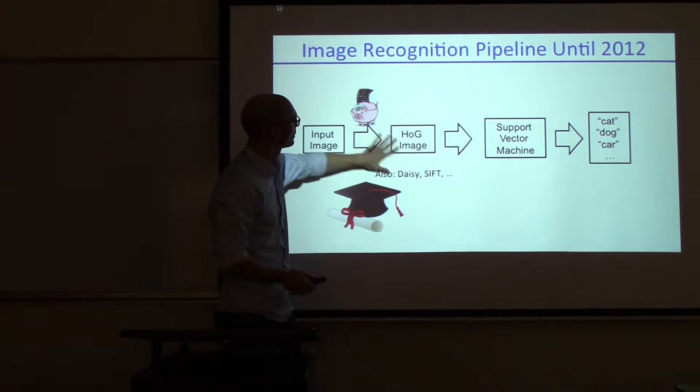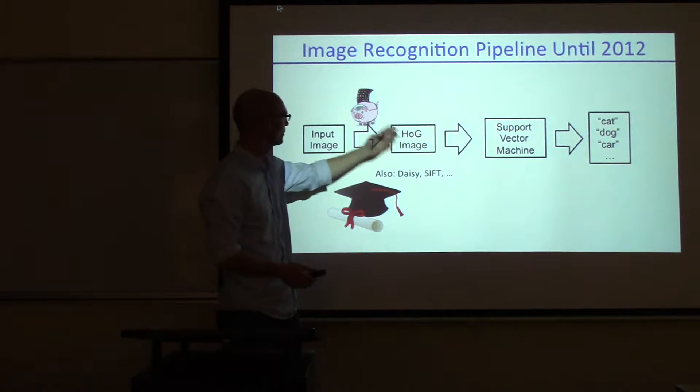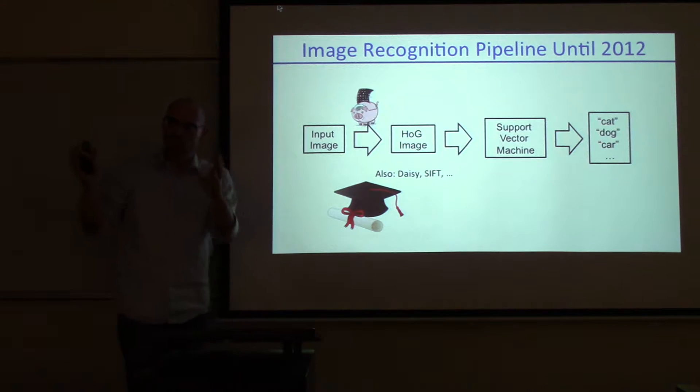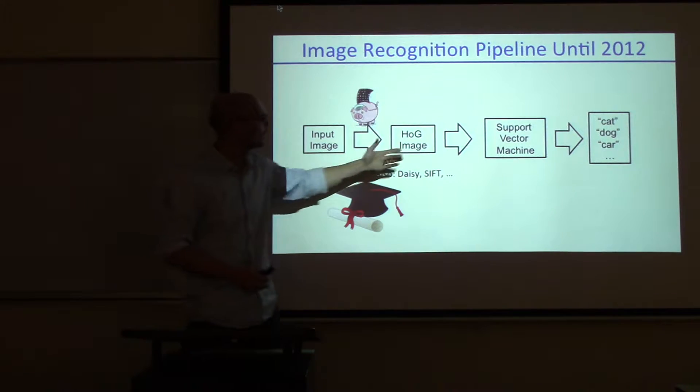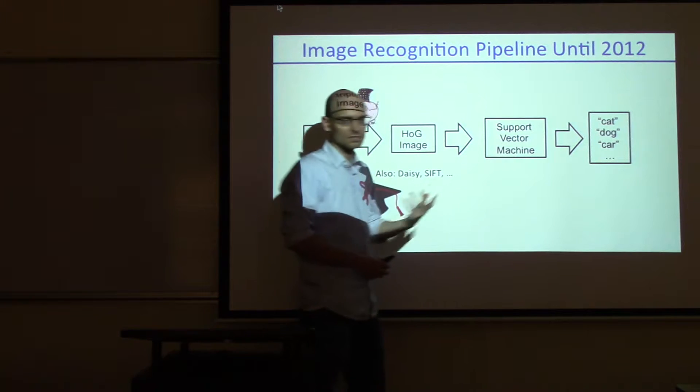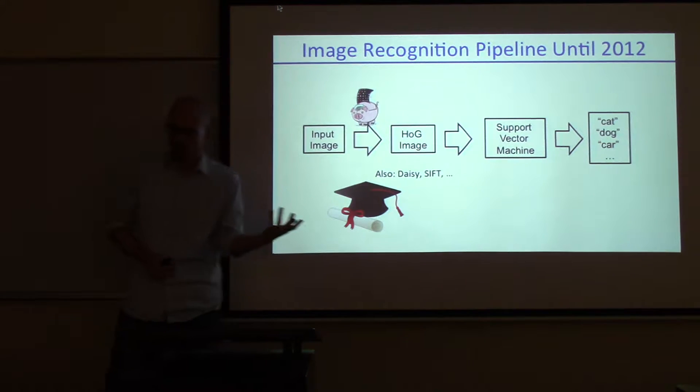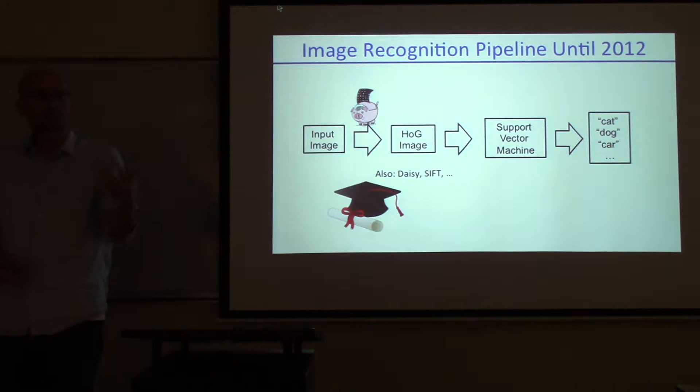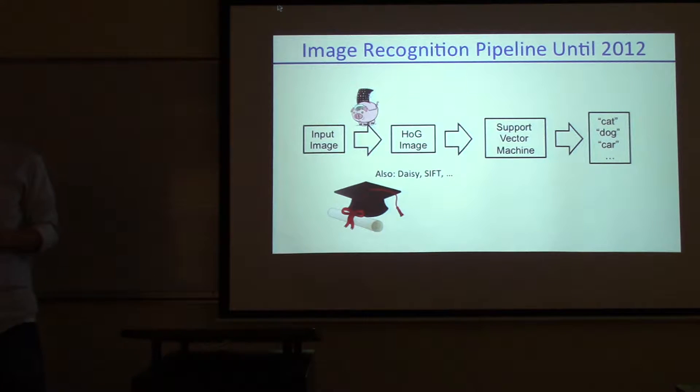Since there is this sensitivity, people would do all kinds of preprocessing, for example hard preprocessing, which makes it into an edge map rather than the original image. That preprocessed image would then be fed into a support vector machine, which is a relatively simple learning system that can, if you give it enough examples of something relatively simple, learn the mapping from input to output. This is what people were doing until 2012.